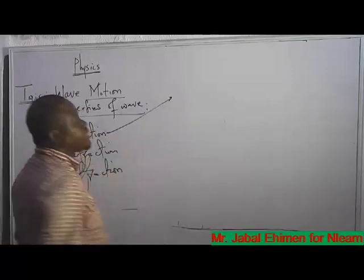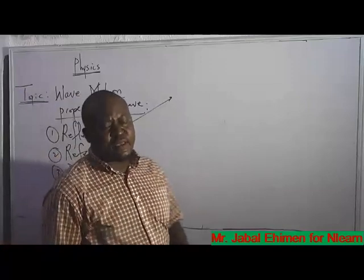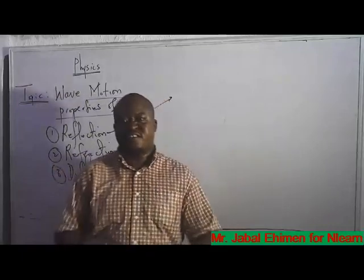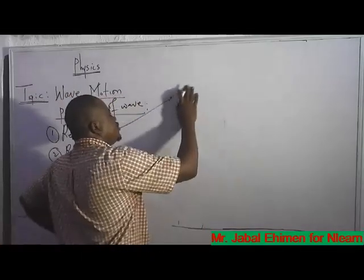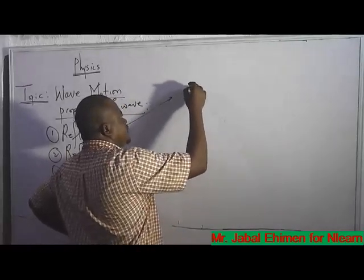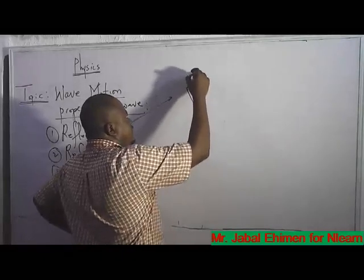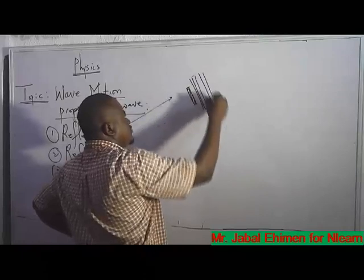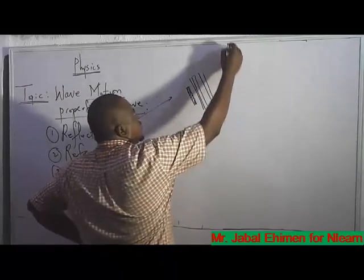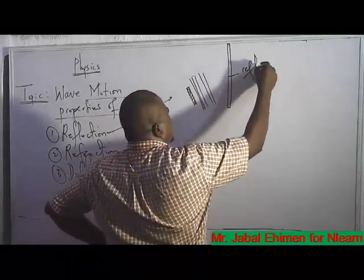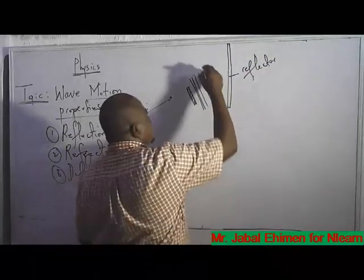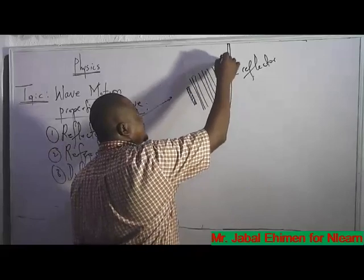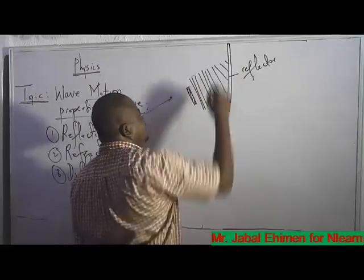The first property is reflection. When a moving wave meets an obstacle, it is observed that it changes direction — it is reflected backward. For example, a body generates a wave that moves forward. On the process of moving, there is an obstacle. As the wave reaches the obstacle, something happens — the wave begins to change direction.